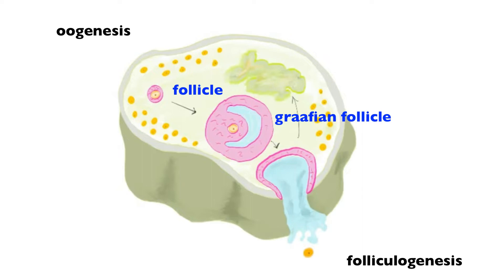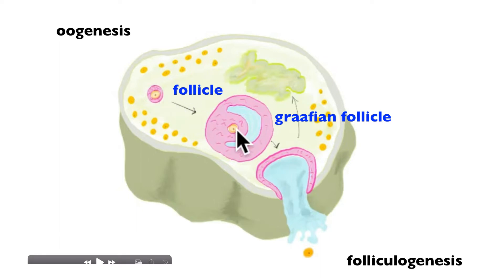Oogenesis begins in utero for females, stalls around birth, and then resumes once a month when the female reaches sexual maturity. About 20 to 25 ova actually resume development and resume meiosis each month at sexual maturity. However, it is only going to be one of those that actually completes meiosis and gets ovulated.